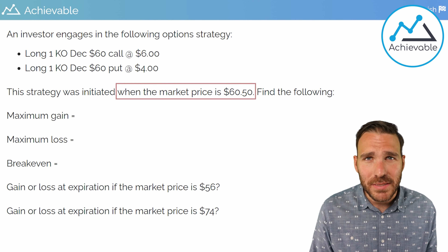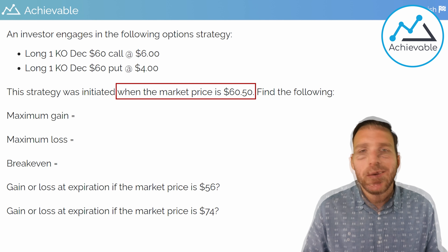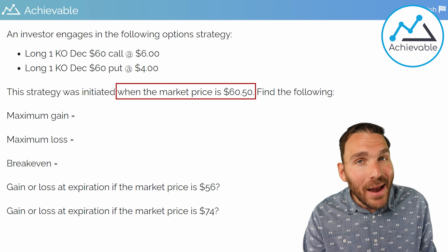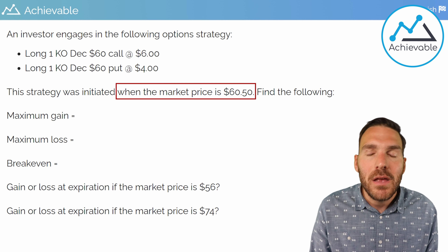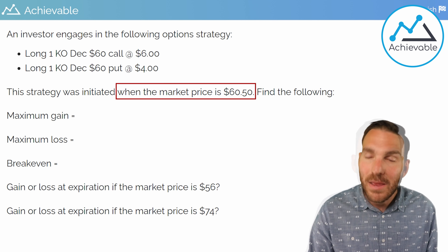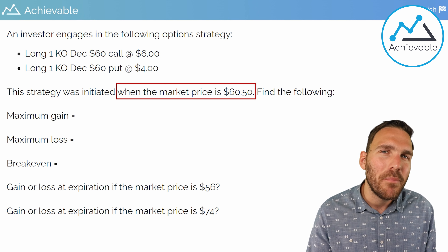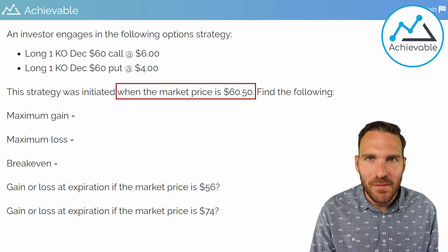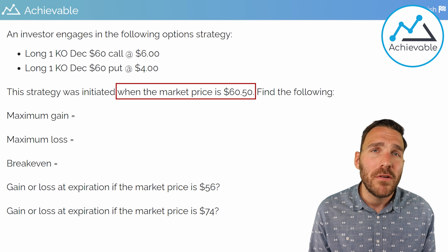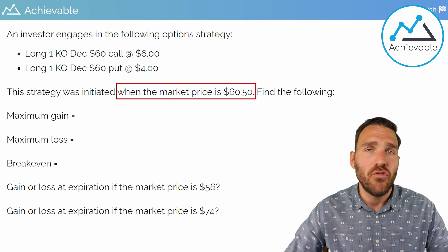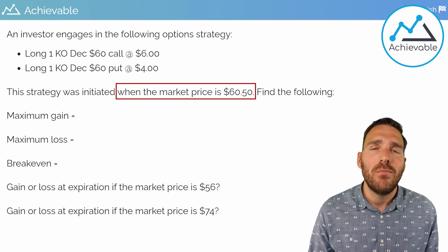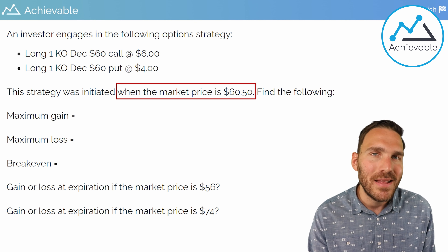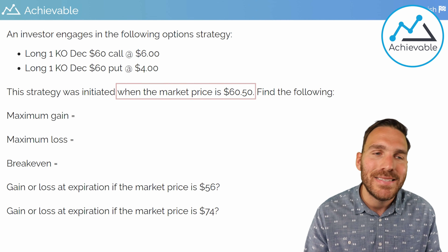Does it matter that the market price was $60.50 when the strategy was established? Not really. Here's a test-taking tip: whenever the market price is provided in conjunction with when the strategy was initiated, that's usually irrelevant information. Market prices are important to determine if an option is eventually exercised or has intrinsic value, but whenever it says the position was established at a certain market price, nine times out of ten that's going to be irrelevant.